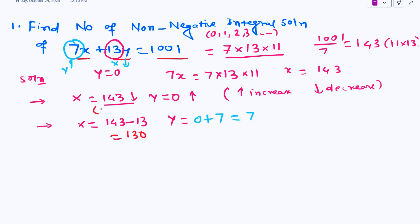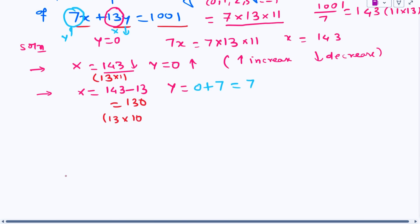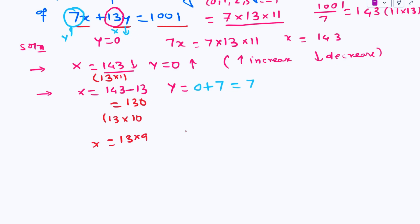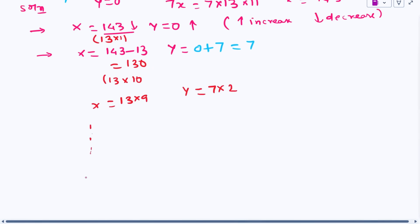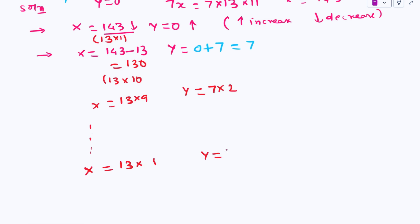The first value of x was 13 into 11, the second value is 13 into 10, and the third value will be 13 into 9, with y's second value being 7 into 2. Moving forward, x will have a last value of 13 into 1 and y will have a last value of 7 into 10.